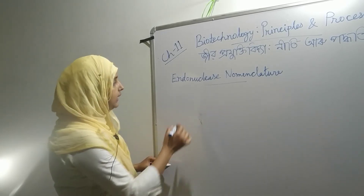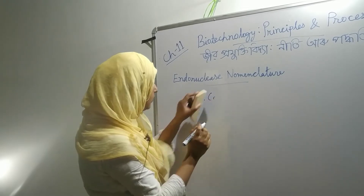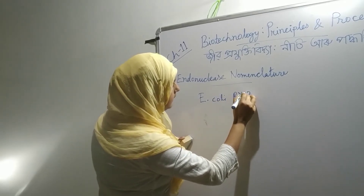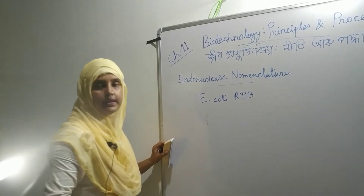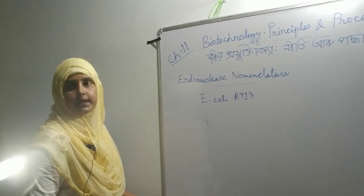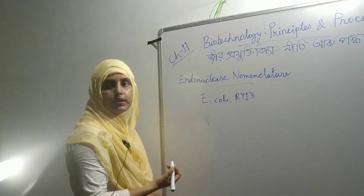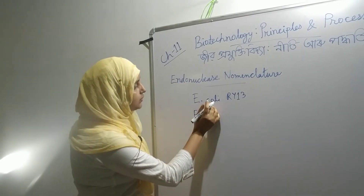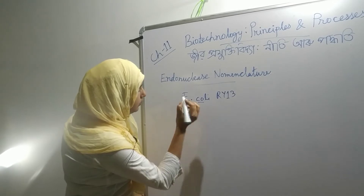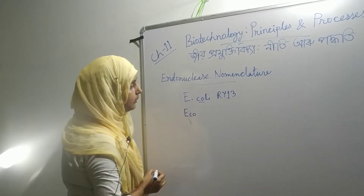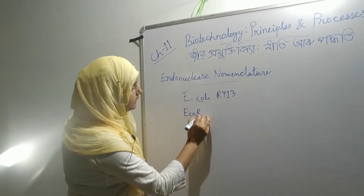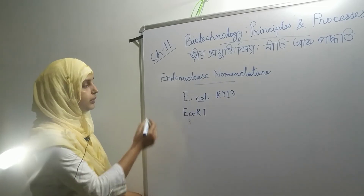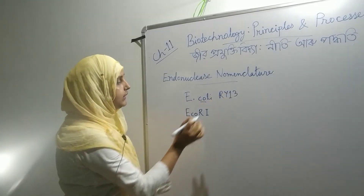For example, E. coli — E. coli RY13. The first in this place is the biggest cause of the discovery. So the first name for us is from E. coli. These two strains come from R. The first discovery is R1. So this example: E. coli RY13. The class name means E. coli R Y-13.